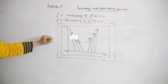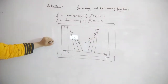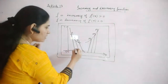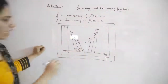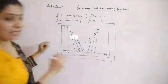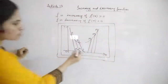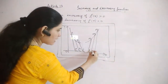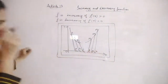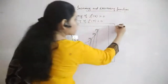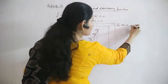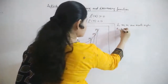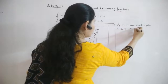The angles these strips make with the x-axis are labeled accordingly: the angles on the decreasing curve are A, B, C — which are obtuse angles — and the angles on the increasing curve are L, M, N — which are acute angles.